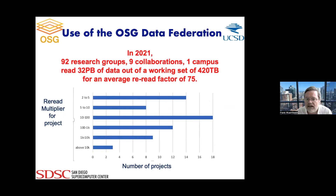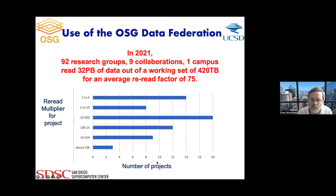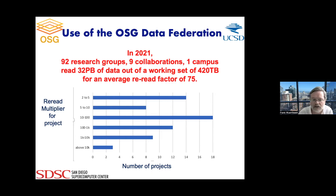In 2021, there were 92 research groups, nine collaborations, and one campus that read 32 petabytes of data out of a working set of 420 terabytes, for an average re-read factor of 75. The histogram of projects by re-read factor spans the entire gamut — from data that is used incredibly often to data that is re-used almost not at all.